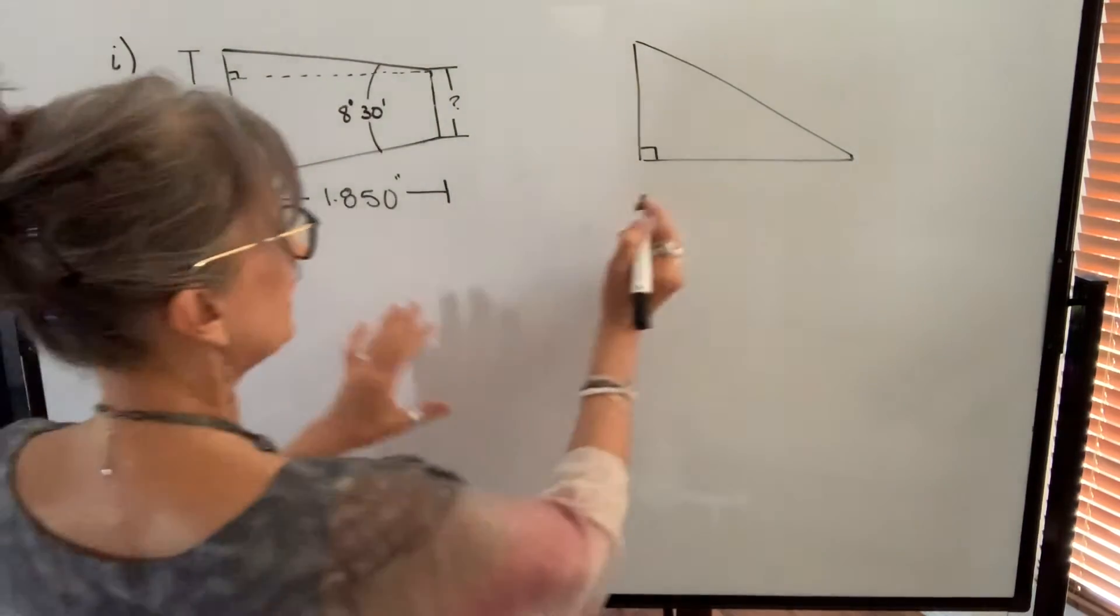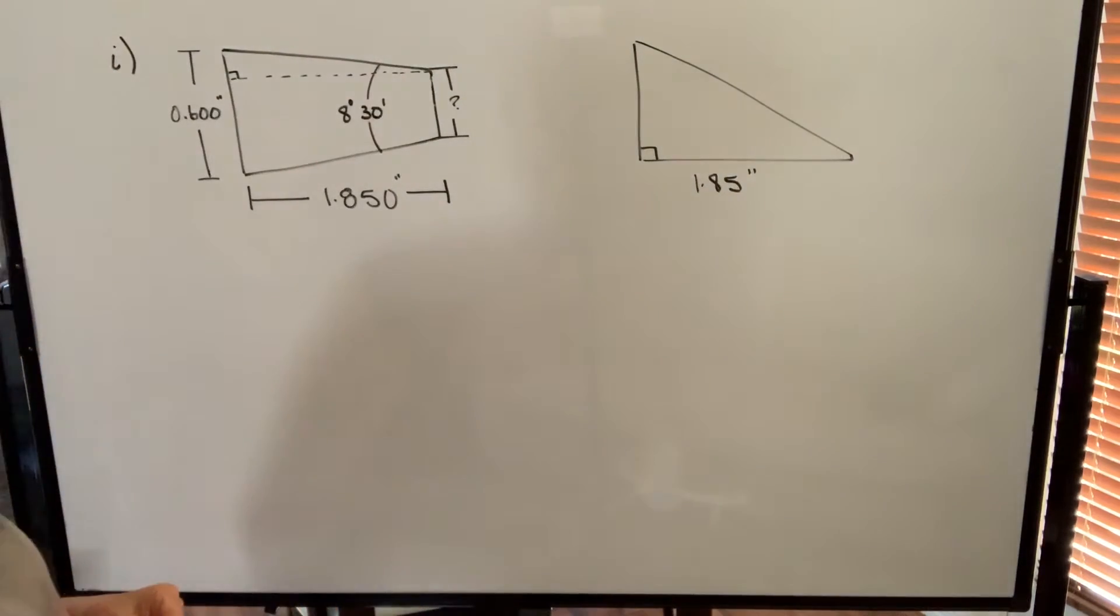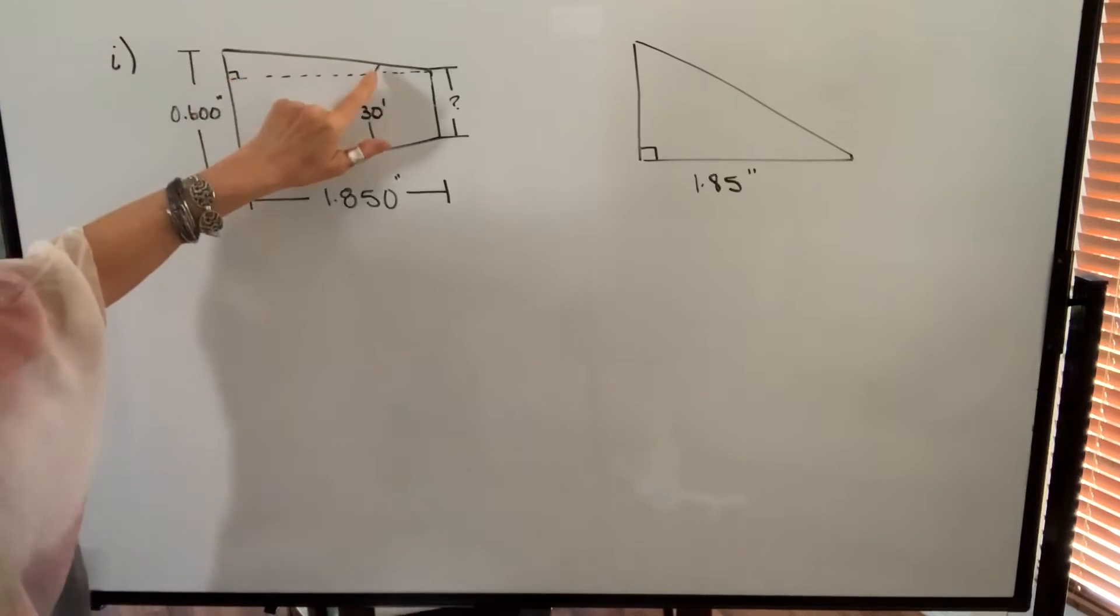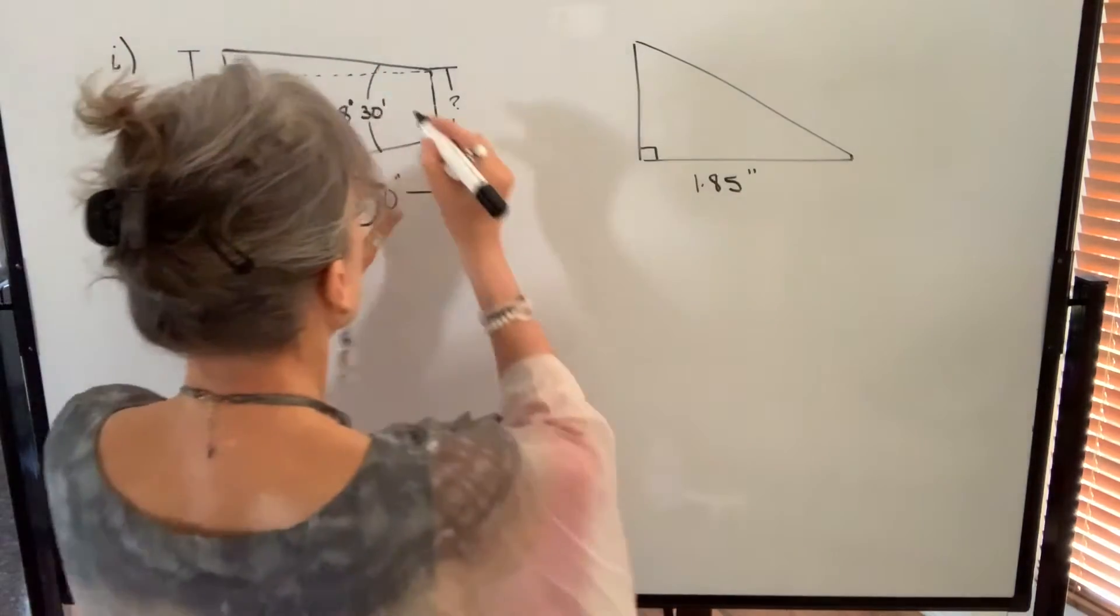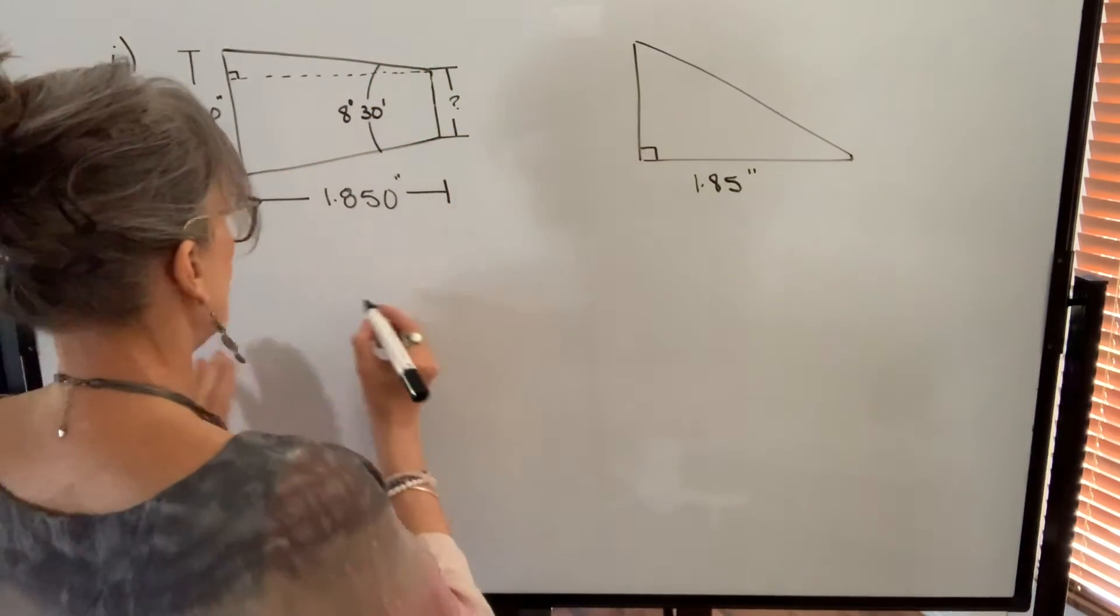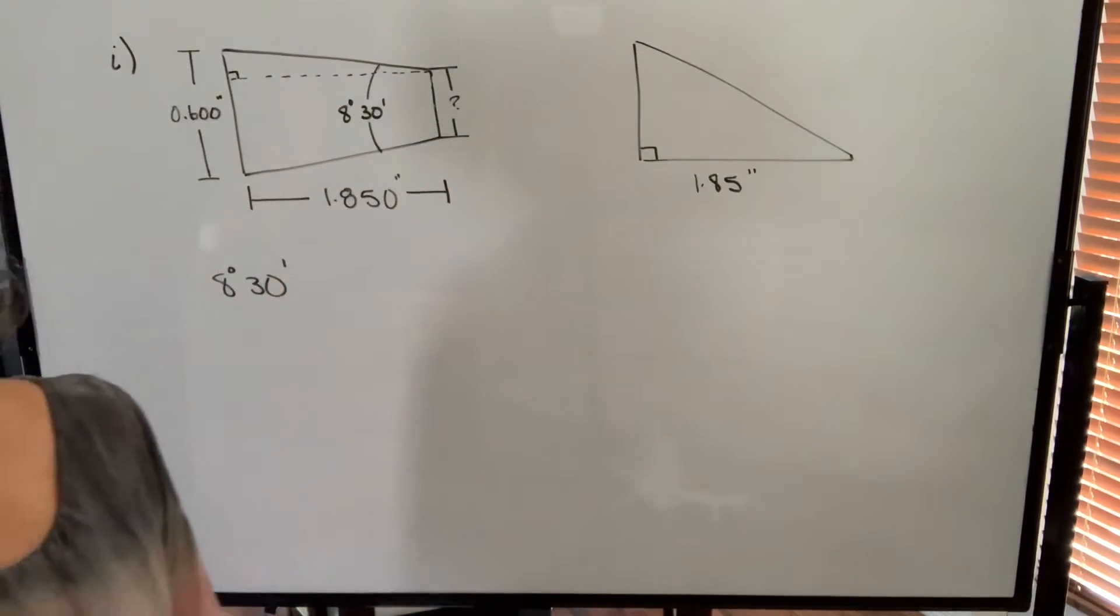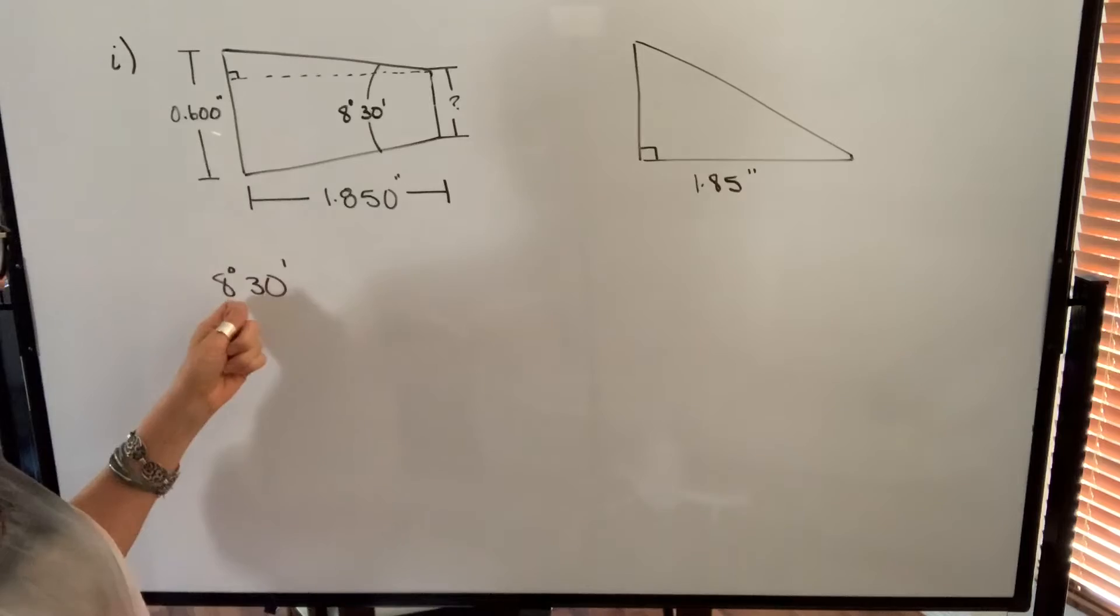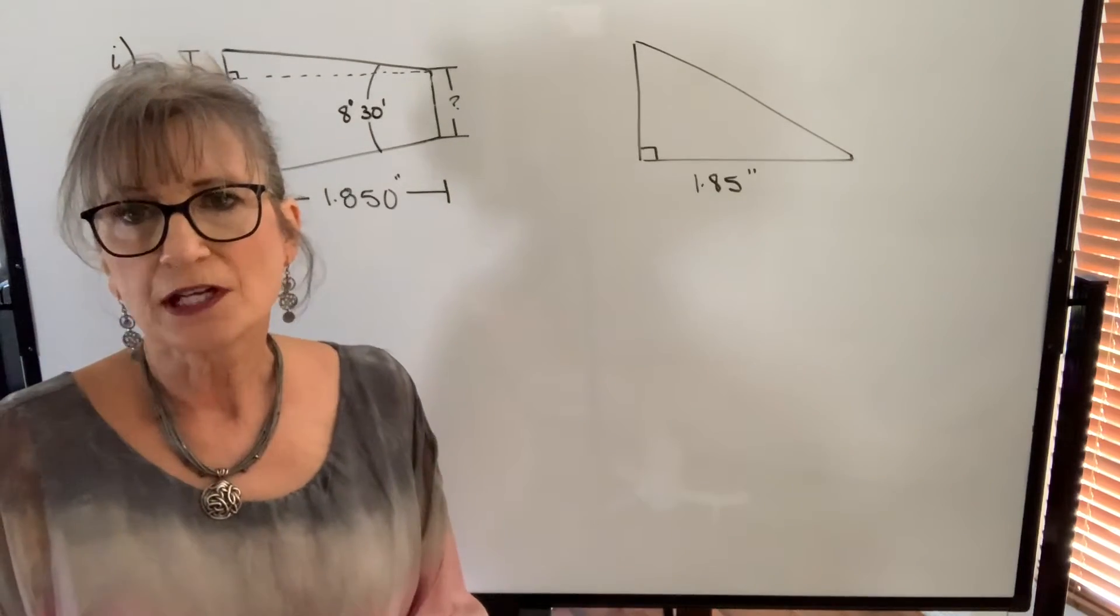We know this length here is 1.850. I'll drop the zero while I'm doing the calculations. I don't know this length here but I can find the angle. The included angle is 8 degrees 30 minutes. Some of you will have calculators that will allow you to find trig functions when your angle is in degrees minutes and seconds. But I'm going to change it to a decimal value.